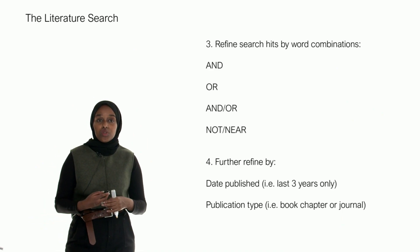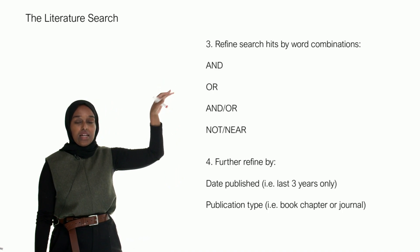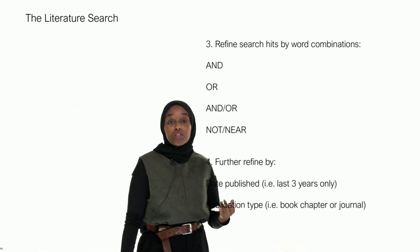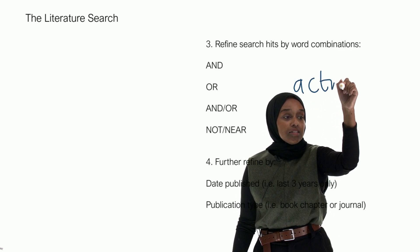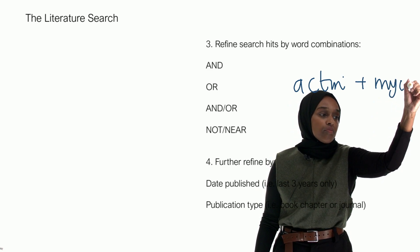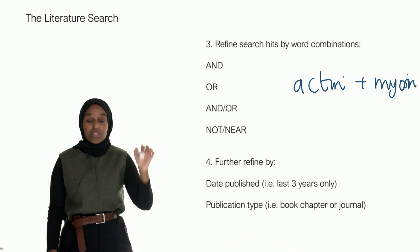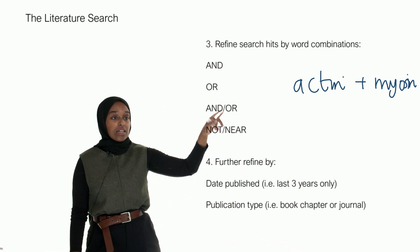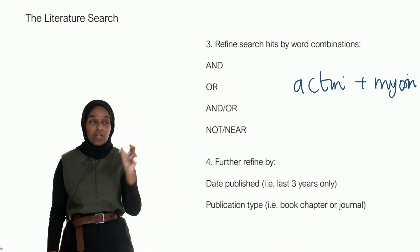You can then refine your search hits using these combinations. So you can use AND. You might want to say, I want to look for a paper that has the word actin and the word myosin. So that's going to give me papers that have both words in the title.